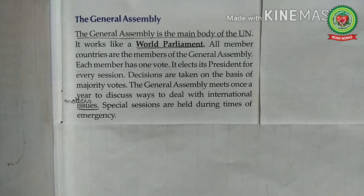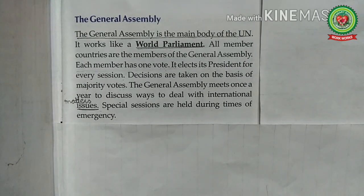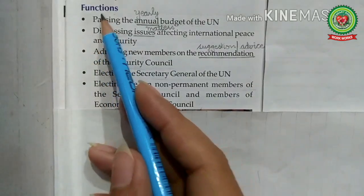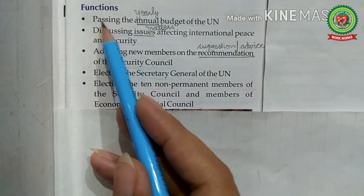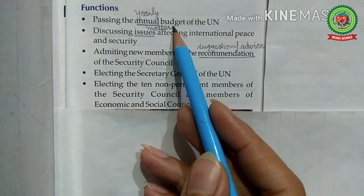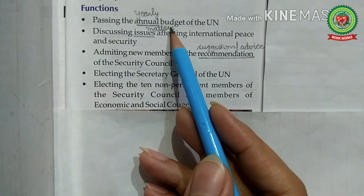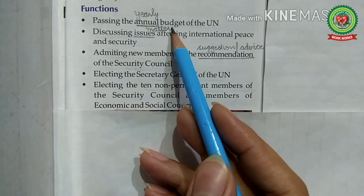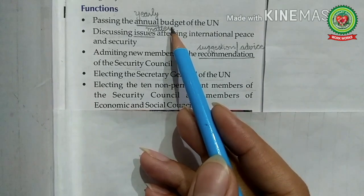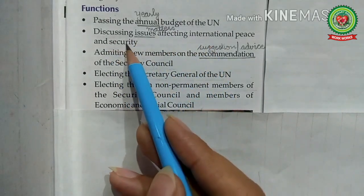The Assembly presented the Universal Declaration of Human Rights on 10th December 1948, and the authority to grant membership to a nation lies with the General Assembly. Functions of the General Assembly: first, passing the annual budget of the UN — budget means an estimate of income and expenditure for a set period of time. The main function is to pass the annual budget of the United Nations and to fix the share of each member state to pay.